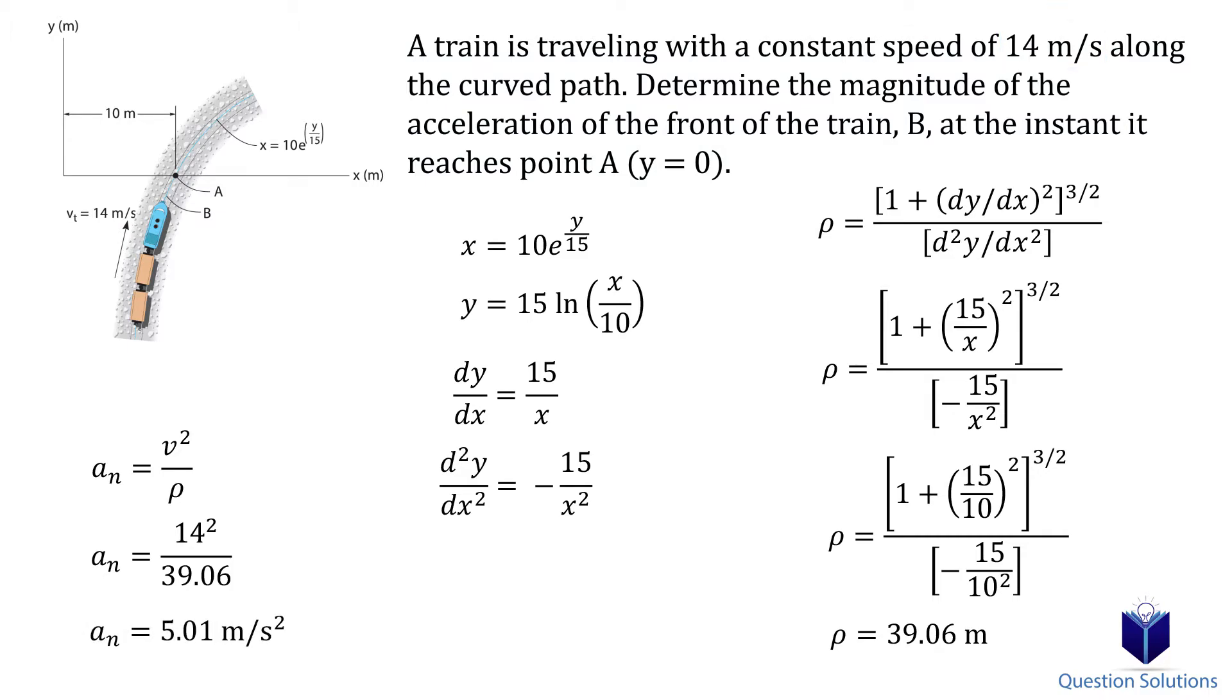The tangential acceleration is zero because the train is traveling with a constant speed. That means the magnitude of acceleration is our normal acceleration.